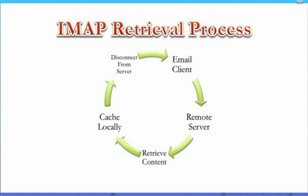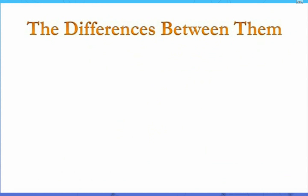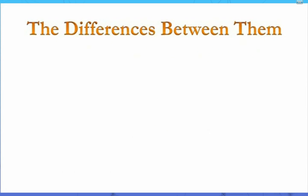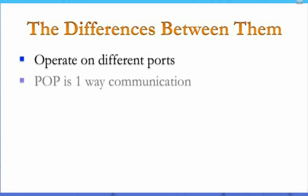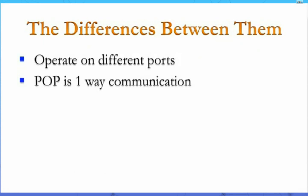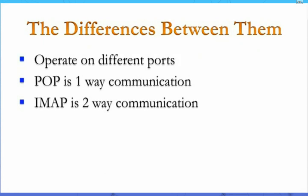There are several differences between IMAP and POP. The two protocols generally operate on different ports. Essentially, POP is a one-way communication path, whereas IMAP offers two-way synchronization between server and client. POP is sufficient if you're accessing your mail using only one device, such as your PC.